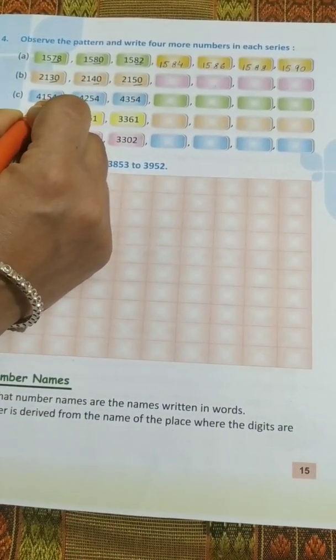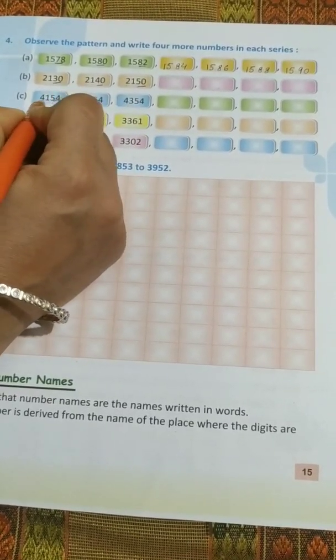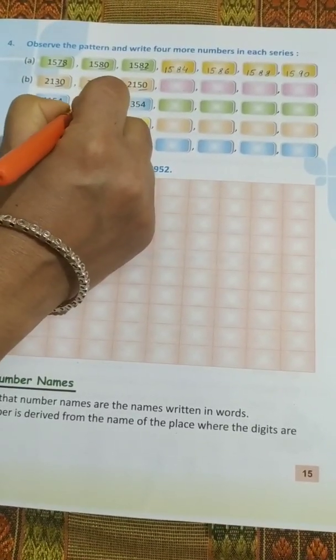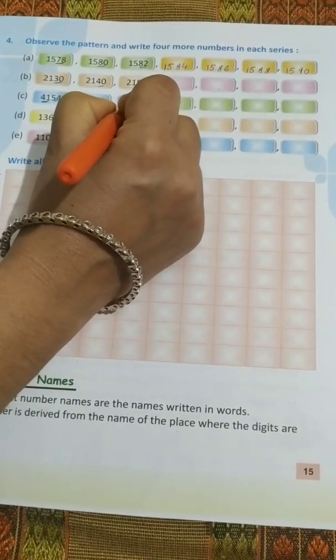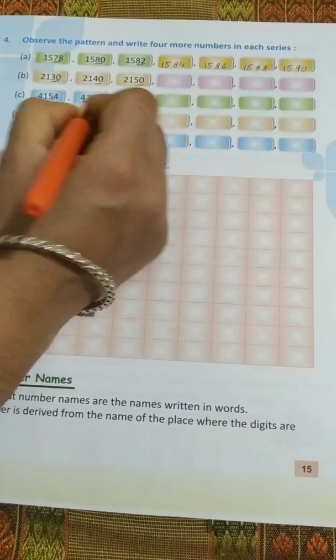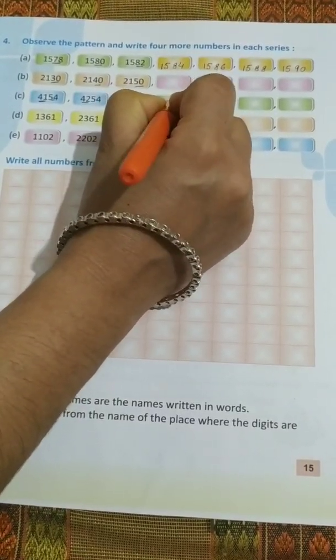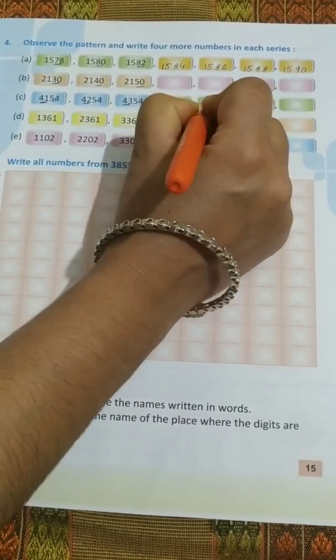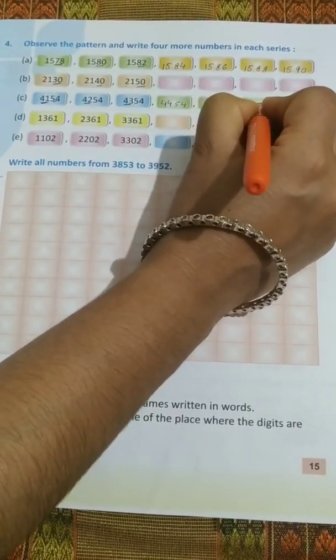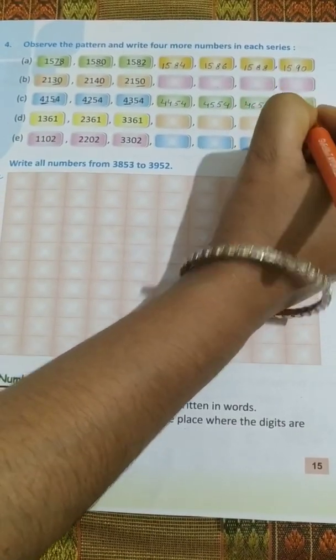54 is same in all the numbers. Here the first two digits are changing. So I will do this. 41 is changing, so I will underline 41. Here 42, then 43. 54, 54, 54 is same in all the numbers. Let's write down: 43 will change to 44. 54, 54 will be the same. 45, 54 will be the same. 46, 54 will be the same. 47, 54 will be the same.